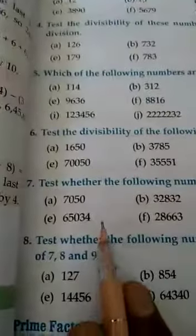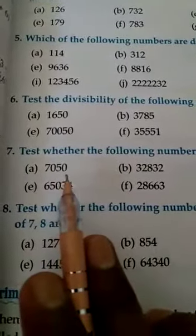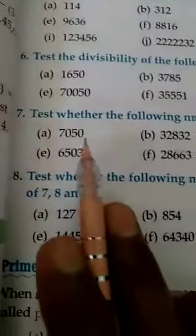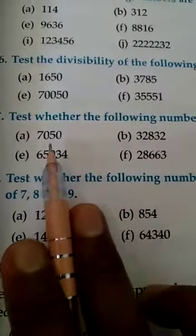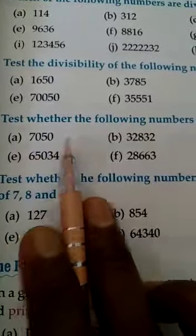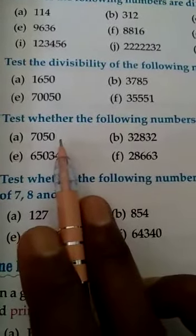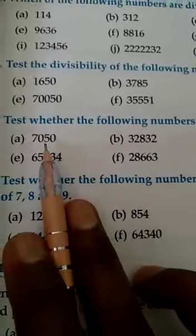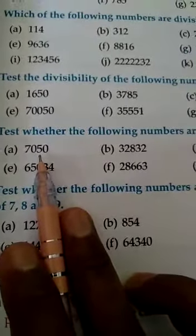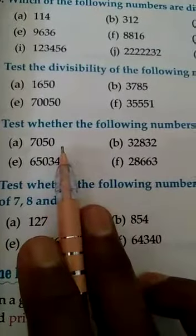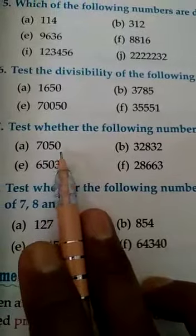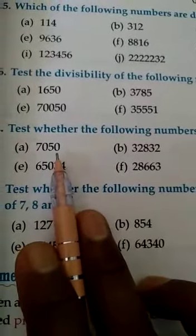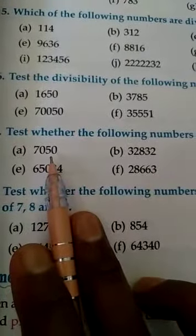Now question number 7: test whether the following numbers are divisible by 6. To check divisibility by 6, any even number which is also divisible by 3 is divisible by 6. So for 7050 — it is an even number. Now check if it is divisible by 3: 7 plus 0 plus 5 plus 0 equals 12, which is divisible by 3. So this number is divisible by 3, and since it is even it is divisible by 2 also. If divisible by both 2 and 3, then it is divisible by 6. So 7050 is divisible by 6.